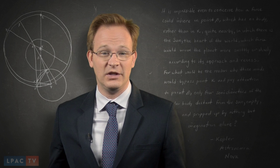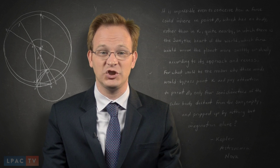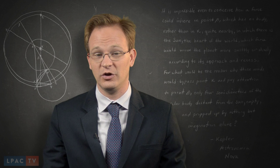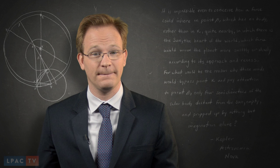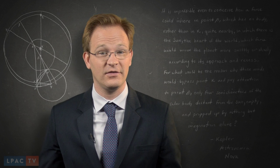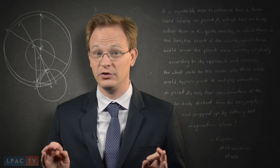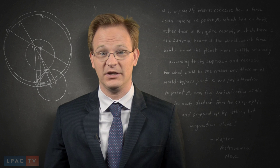He calculated the difference in the orbit of Mars if the actual Sun were used to determine its characteristics, rather than the center of the Earth's orbit. The difference was over one degree, which was definitely observable.